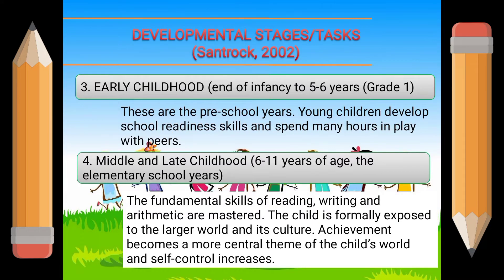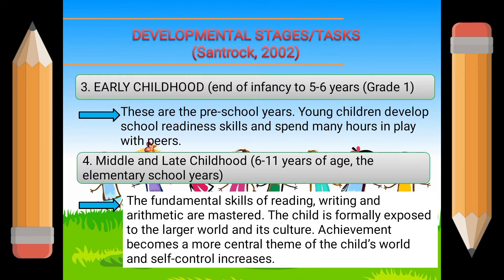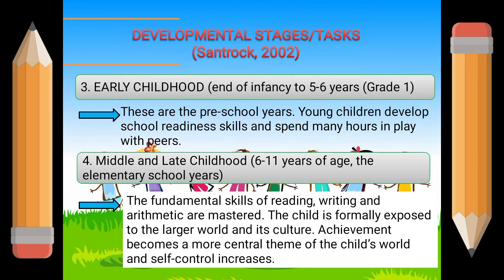Early childhood spans from the end of infancy to 5 to 6 years — the preschool years. Young children develop school readiness skills and spend many hours in play with peers. Next is middle and late childhood, 6 to 11 years of age — the elementary school years. The fundamental skills of reading, writing, and arithmetic are mastered. The child is formally exposed to the larger world and its culture. Achievement becomes a more central theme and self-control increases.